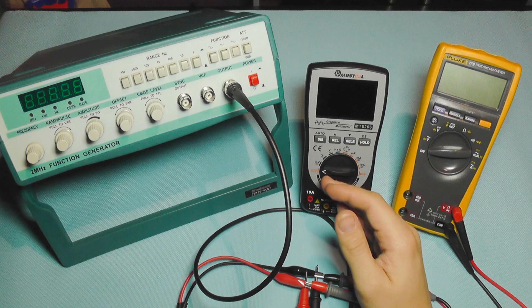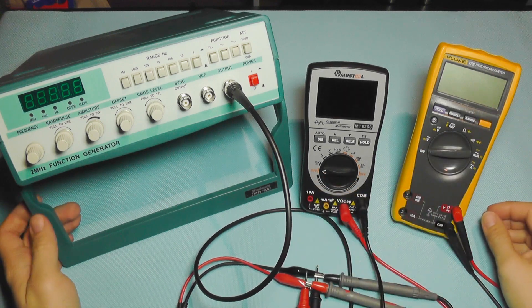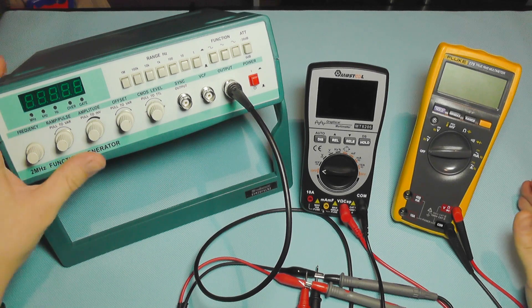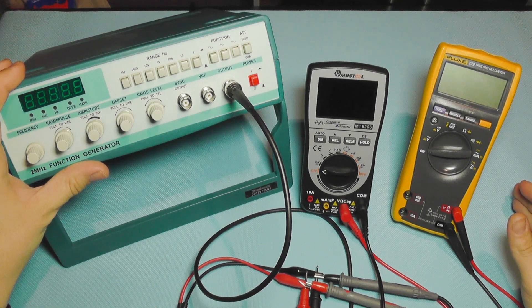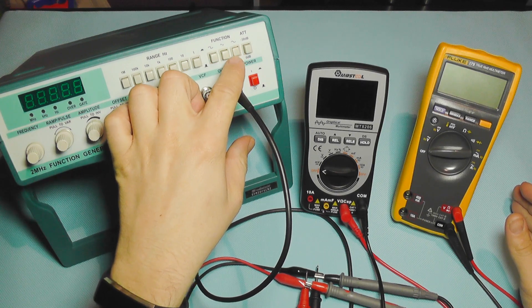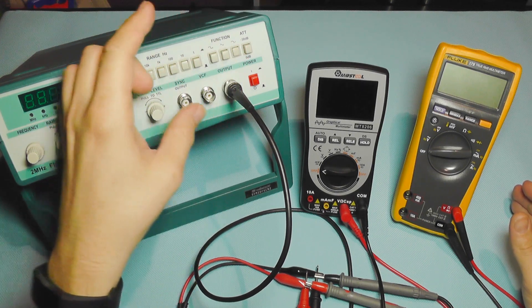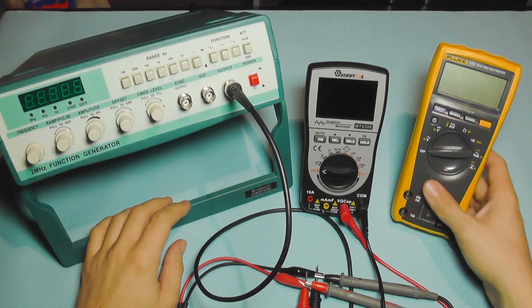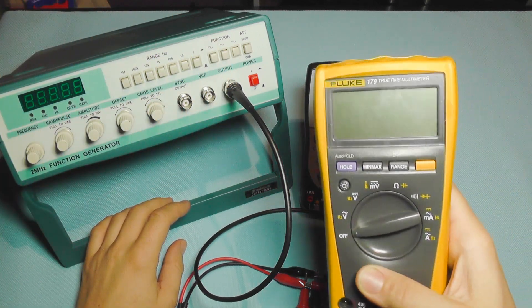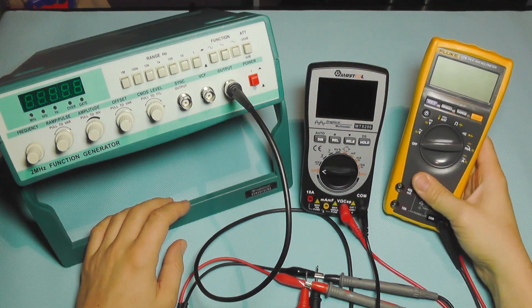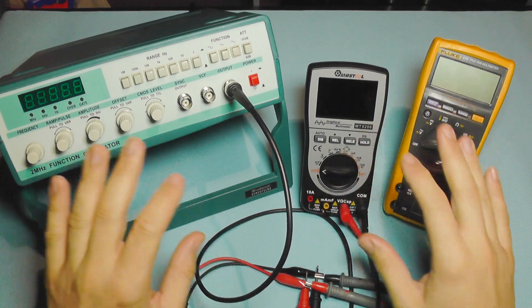They asked if it's true RMS or not, and if I can compare it with something better. So today I have prepared this function generator that creates different types of signals such as sine wave and rectangular wave, and also I have a true RMS multimeter, a Fluke 179 model.